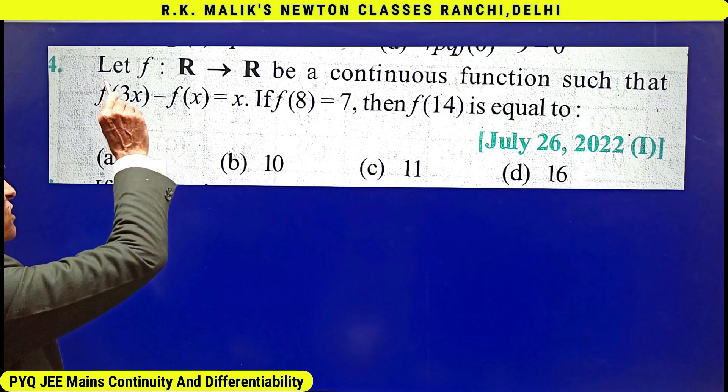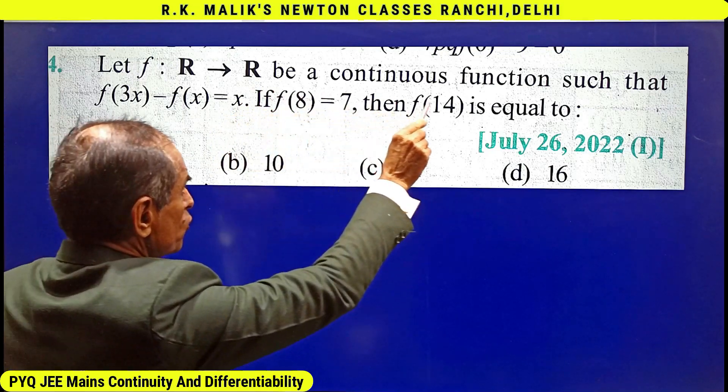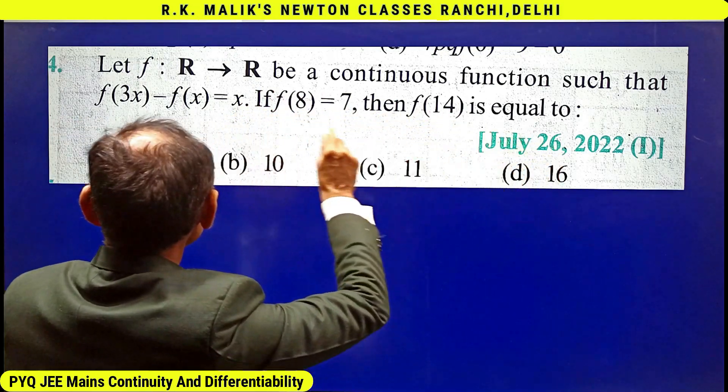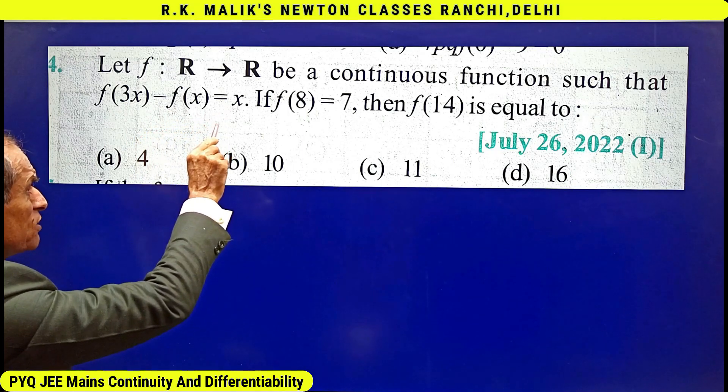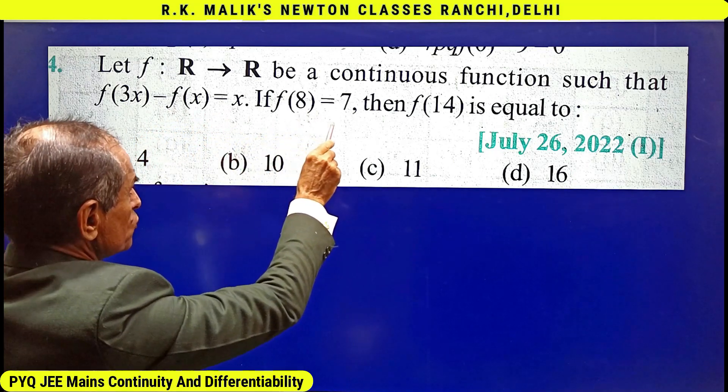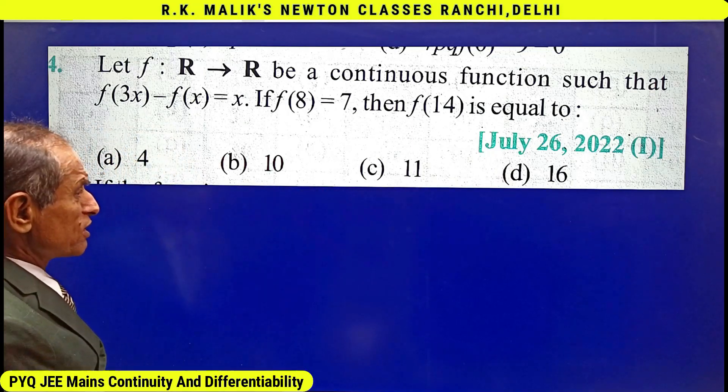In this question it is given that let f: R → R be a continuous function such that f(3x) - f(x) = x. If f(8) = 7, then f(14) is equal to—you have to find the correct choice.